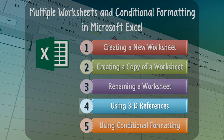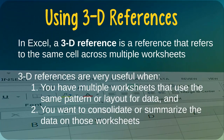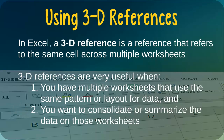Next, we'll learn about how to use 3D referencing in Excel. In Excel, a 3D reference is a reference that refers to the same cell across multiple worksheets. 3D references can be very useful when you have multiple worksheets in a workbook that use the same pattern or layout for their data, and you want to consolidate or summarize the data on those worksheets. In these situations, 3D referencing may be a perfect solution. Let's see an example.